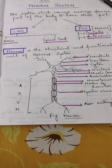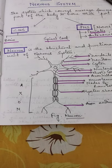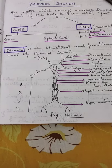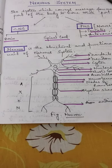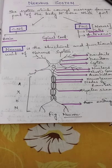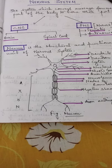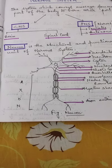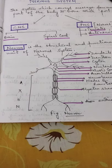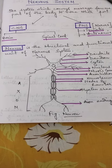This nervous system can be divided into two parts: CNS and PNS. CNS is the central nervous system and PNS is the peripheral nervous system. Central nervous system has two main components, brain and spinal cord, and peripheral nervous system deals only with the nerves.